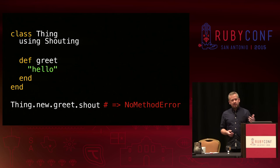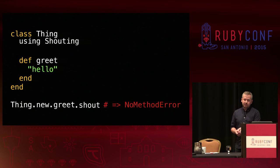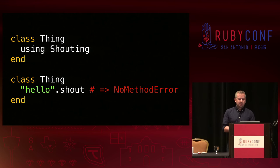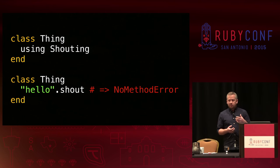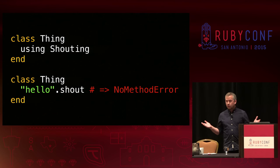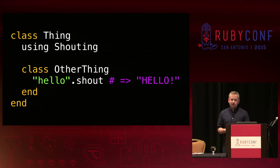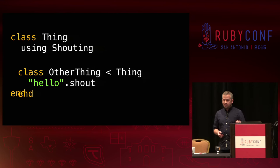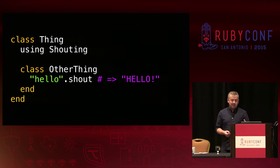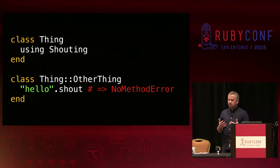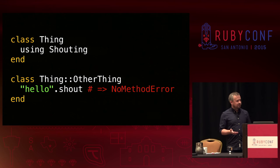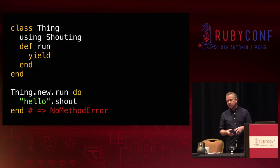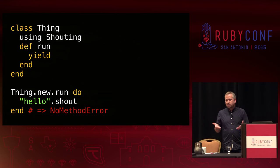But this doesn't work. We cannot call our shout method on the string returned by our method, even though that string object was created within a class where the refinement was activated. Here's another broken example: we've activated the refinement inside our class, but when we reopen the class and try to use the refinement, we get a no method error. If we nest a class within another where the refinement is active, it seems to work, but it doesn't work in subclasses unless they're also nested classes. And even though nested classes seem to work, if you define them using the double colon or compact form, the refinements will have disappeared again. Even blocks seem to act a little bit strangely — our class uses the refinement, but when we pass a block to a method in that class, suddenly it breaks, as if the refinement has disappeared.